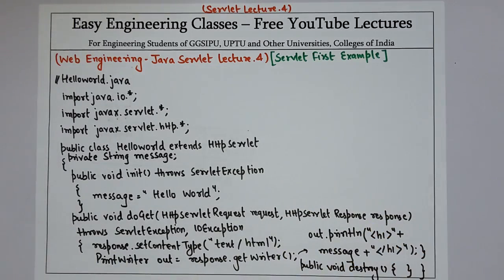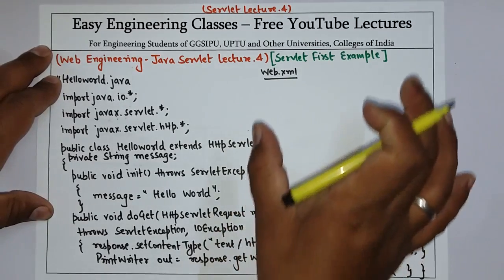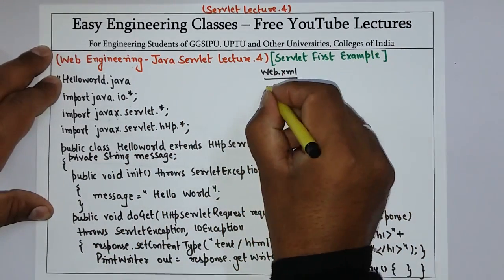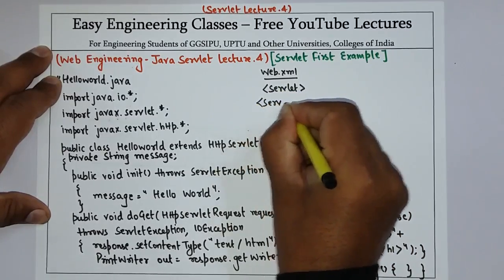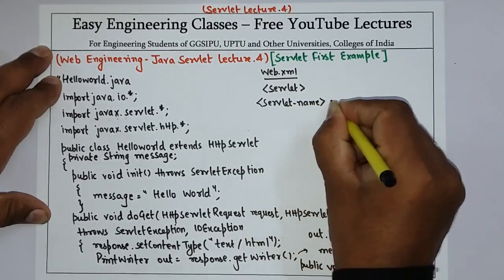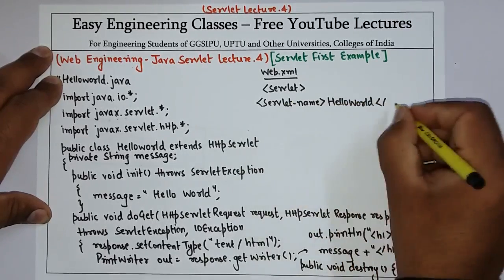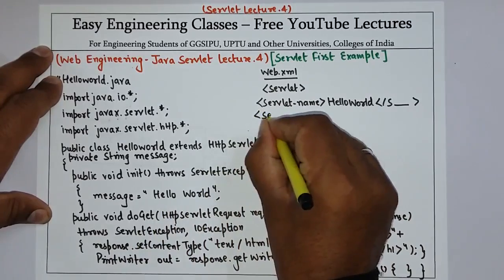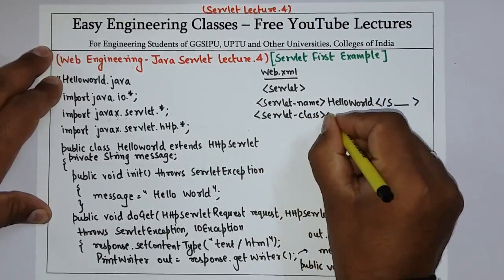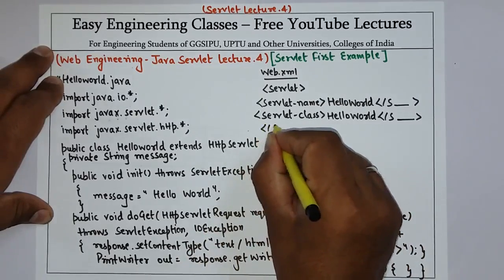Now to run a servlet on a server we have to create an XML mapping file, and the name of that file is web.xml. To run this code you have to write this mapping file as well. Create a servlet tag, then inside it a servlet-name tag — specify the name of the servlet, that is HelloWorld — then close that tag. Then add a servlet-class tag, and in this it is also HelloWorld. Close it and then close the servlet tag.